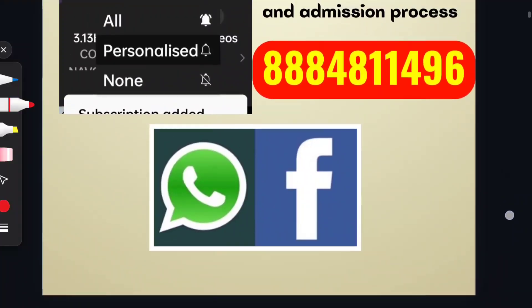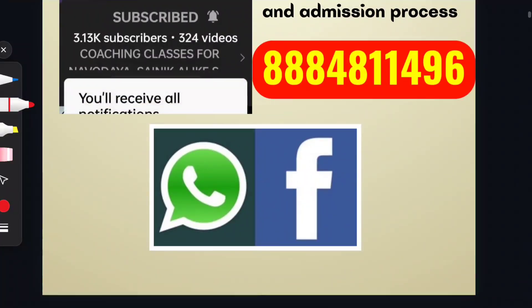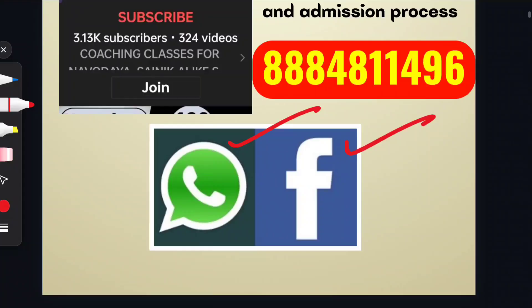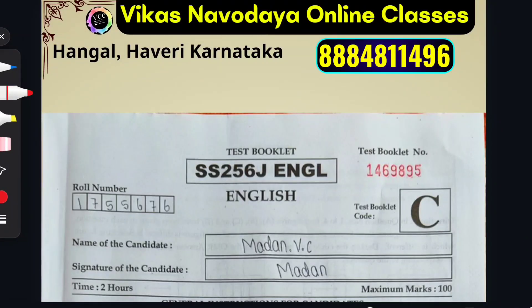Share this video in your WhatsApp group and Facebook group. Welcome to Vikas Navodaya Online Classes, Hangul District Averi, Karnataka. Our mobile number is 388-4811-496. We are picking C Series, English Medium. Dear students, let us start now.